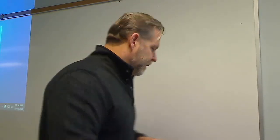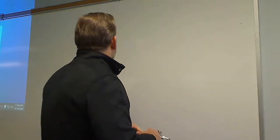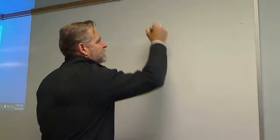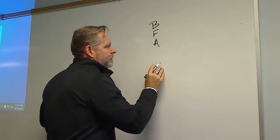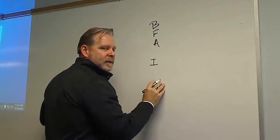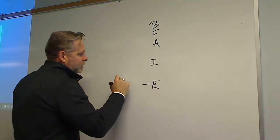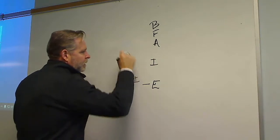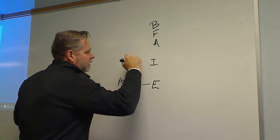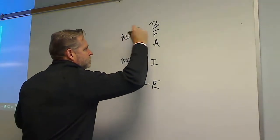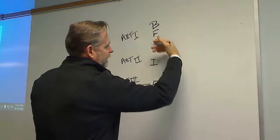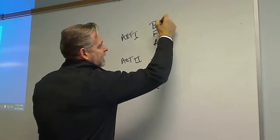Going back to the policy process: those five steps are build, formulate, adopt, implement, and evaluate. If we map these to articles: Article Three covers evaluation, Article Two covers implementation, and Article One covers the legislative stages of build, formulate, and adopt. Build is the identification of a problem — getting to understand there's a problem that needs to be fixed.